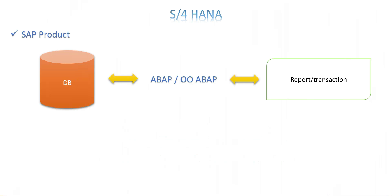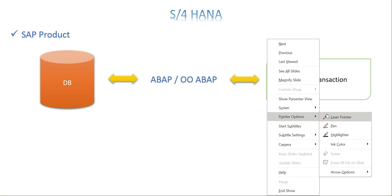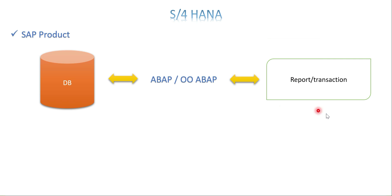In SAP or any application, whenever a product evolves with a new set of possibilities, as a developer we have to explore those areas. The basic idea is: you have to get the data and feed it to a transaction or report. Technically in SAP we call it a transaction or a report - that is very basic.